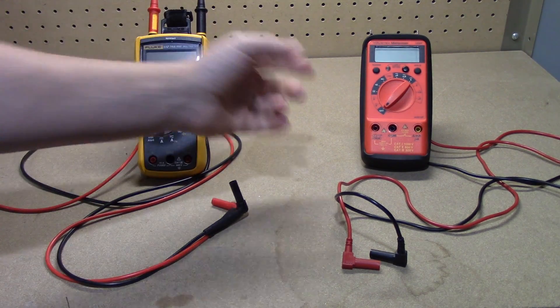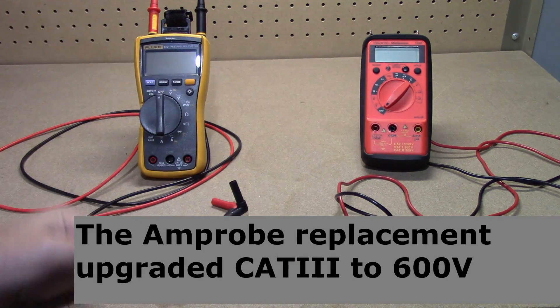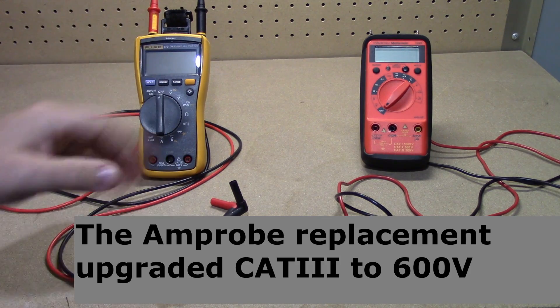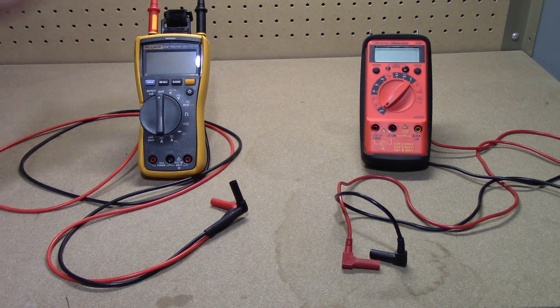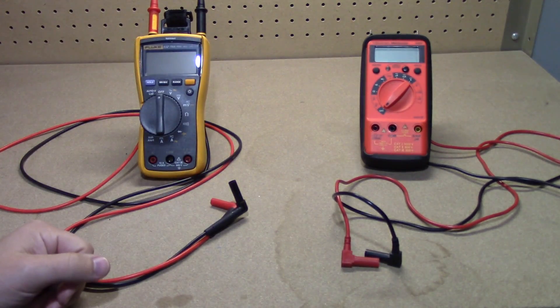Another example is the connections are only rated for category 3 at 300 volts for the Meterman, whereas category 3 goes up to 600 volts on the Fluke. Right away, going more expensive you get more features and you get more functionality of the same features that both of these products have.